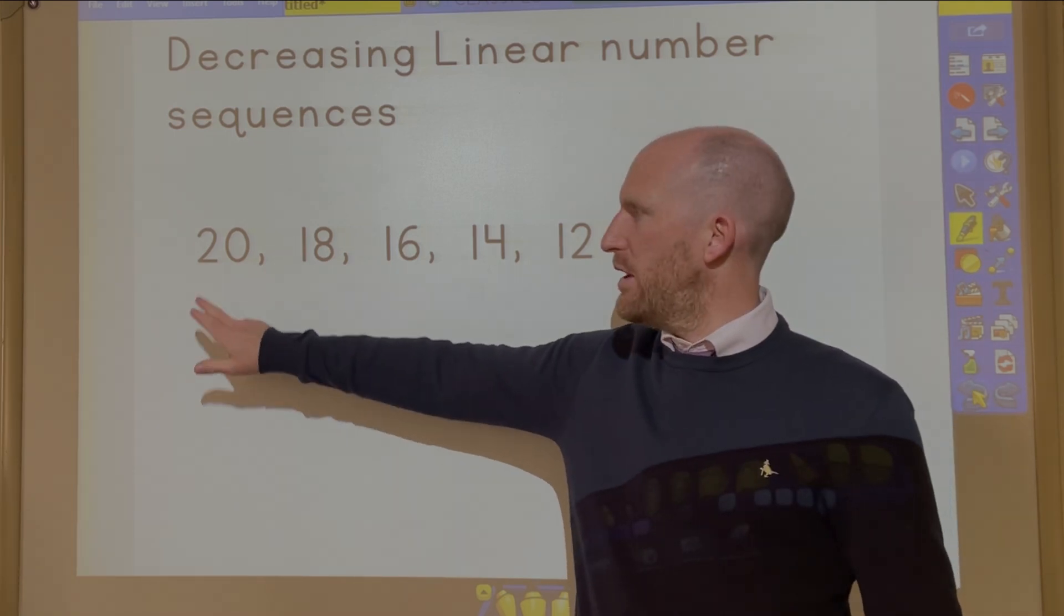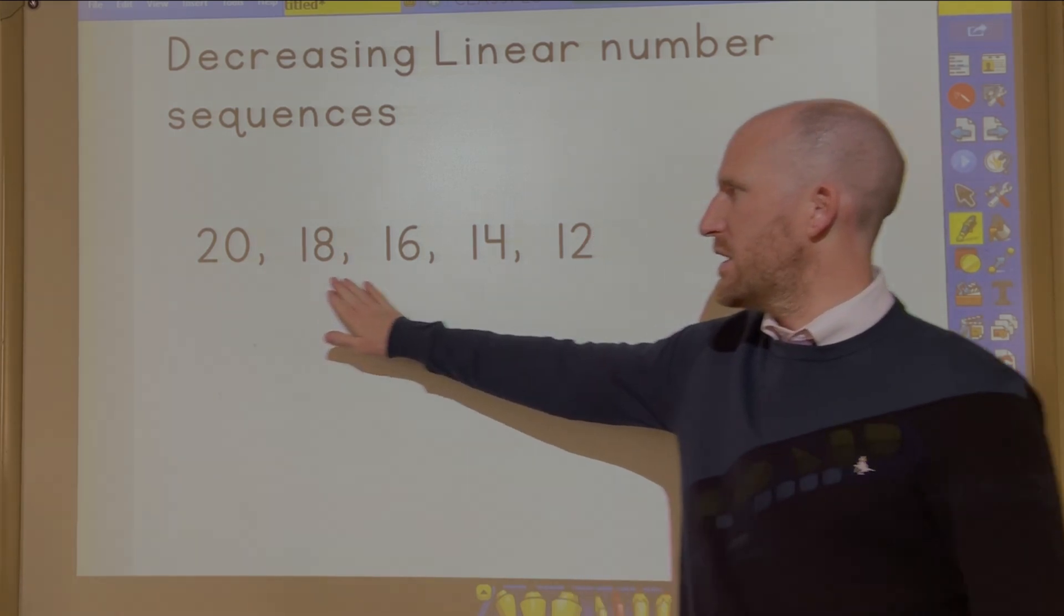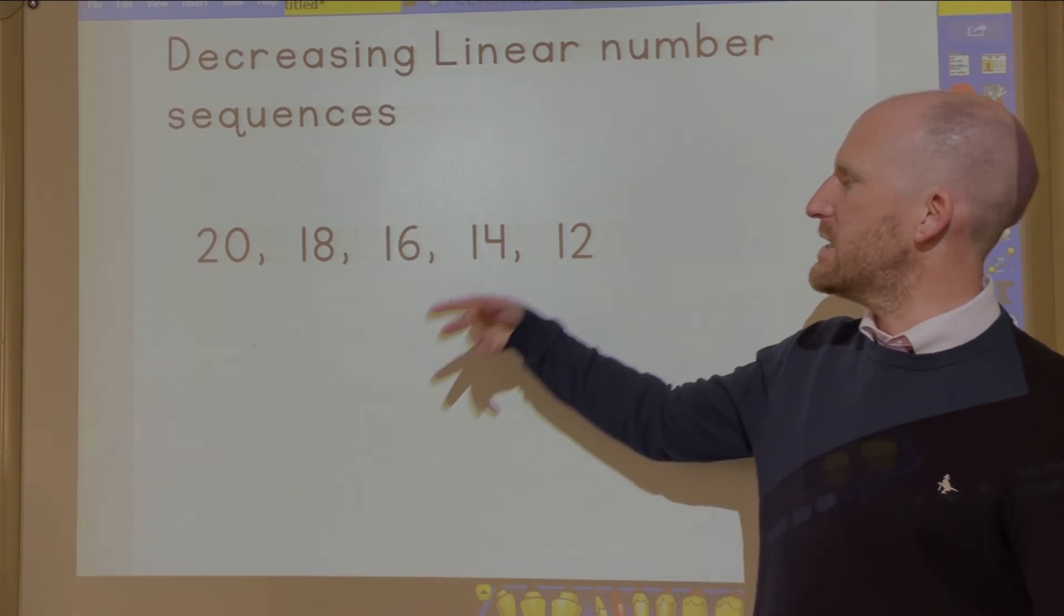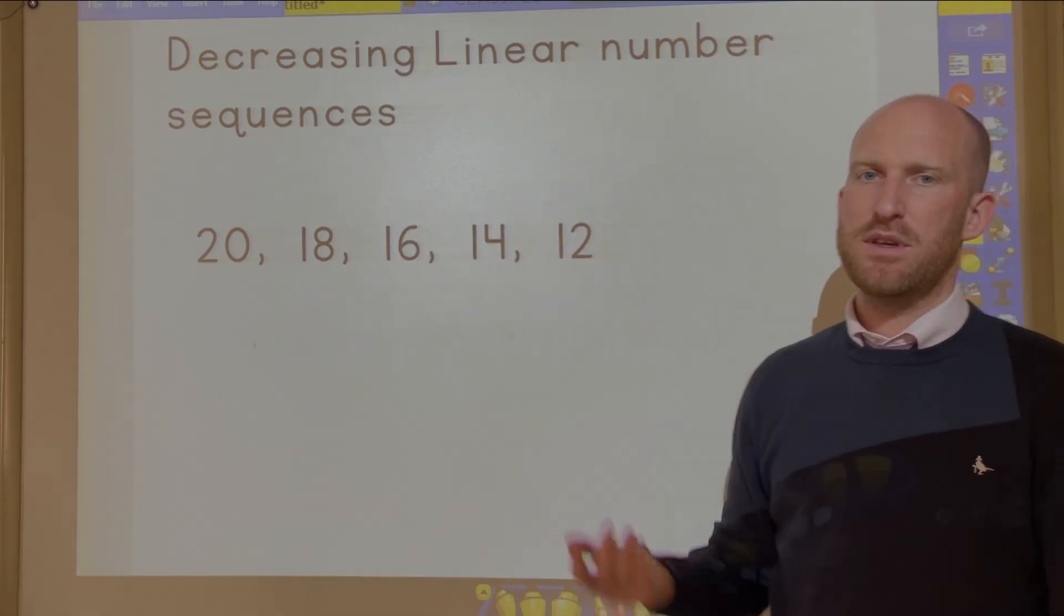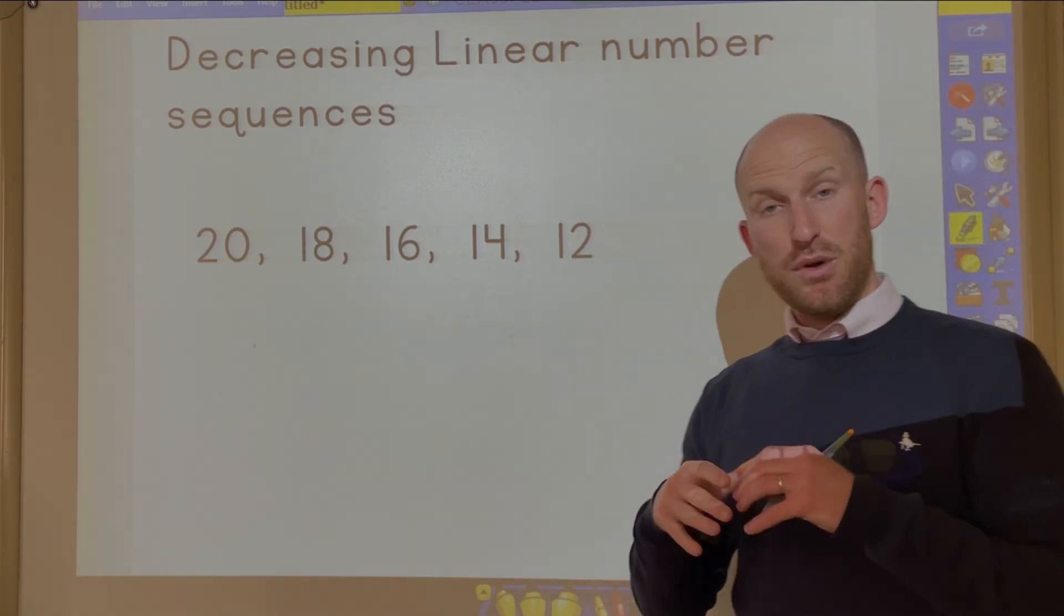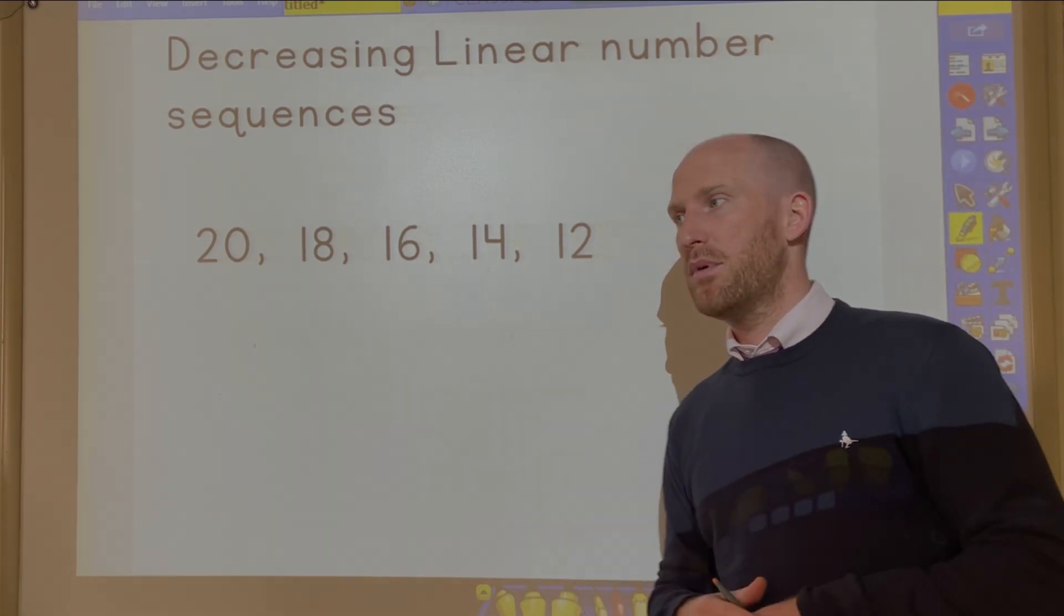So on the first example here I have a sequence of five numbers that are decreasing: 20, 18, 16, 14, 12. I can very easily see the pattern but how do I create the nth term formula?